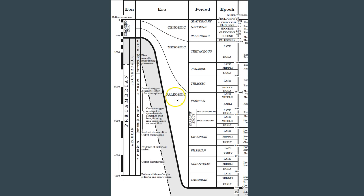The Paleozoic era is broken into the Permian, Carboniferous, Devonian, Silurian, Ordovician, and Cambrian periods. The Mesozoic era is broken down into the Triassic, Jurassic, and Cretaceous periods. The Cenozoic era is broken down into the Paleogene, Neogene, and Quaternary periods. Each of those periods is broken down further into epochs — most are just Early, Middle, and Late, until you get to the Paleogene and Neogene, which have very specific epoch names. Right now, in this current day and age, we are in the Holocene epoch.